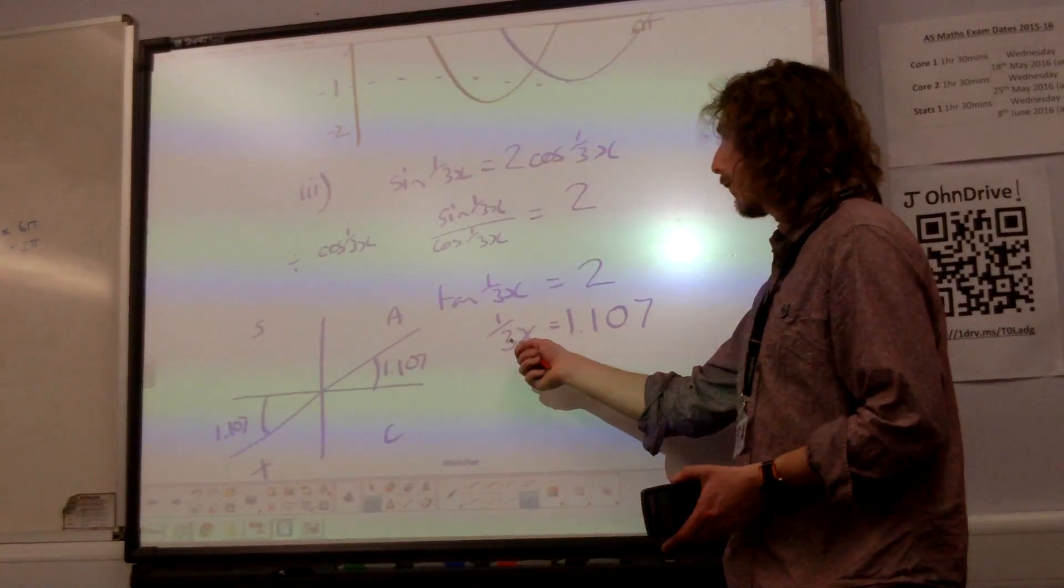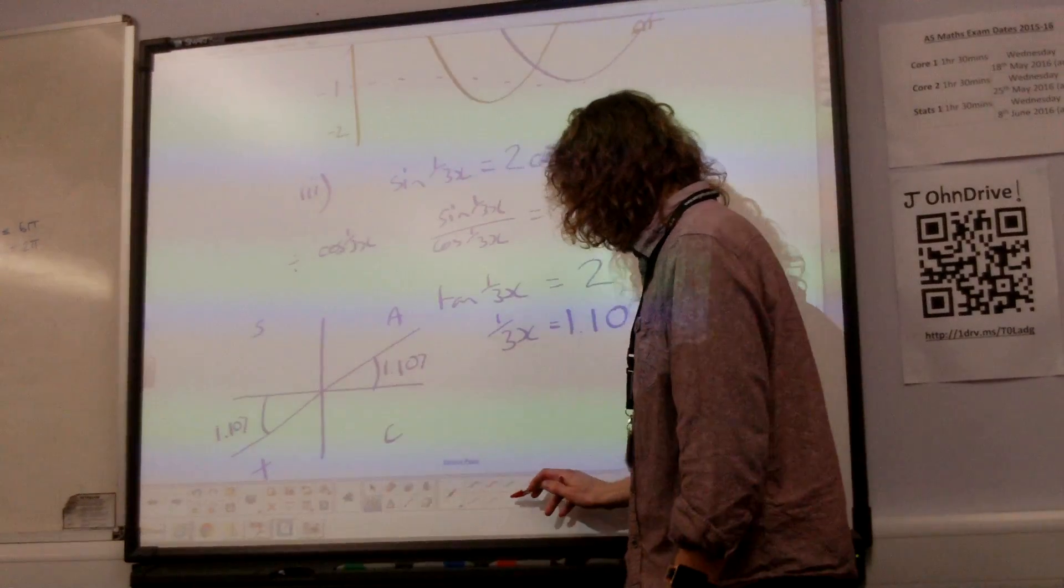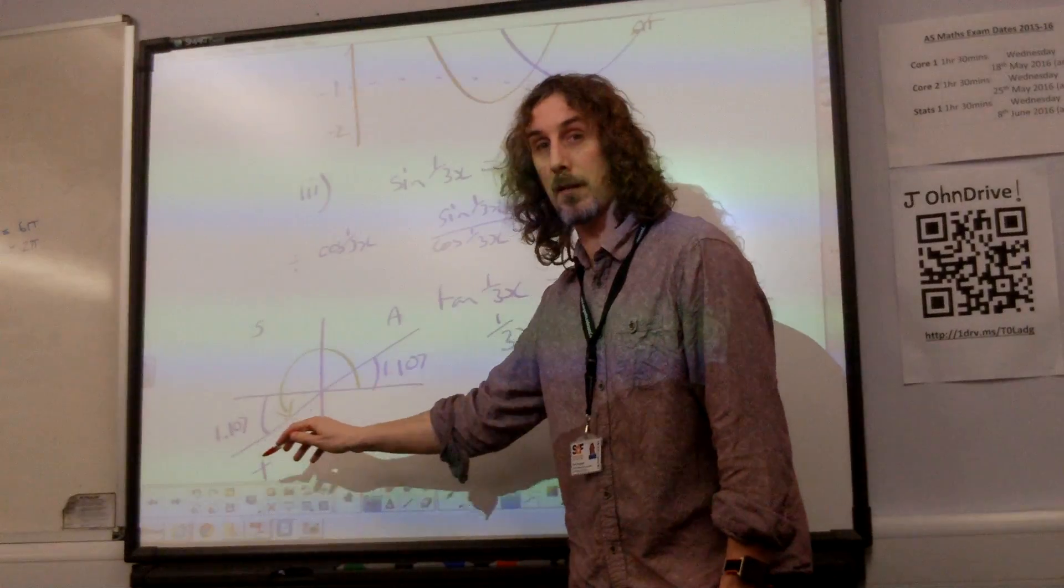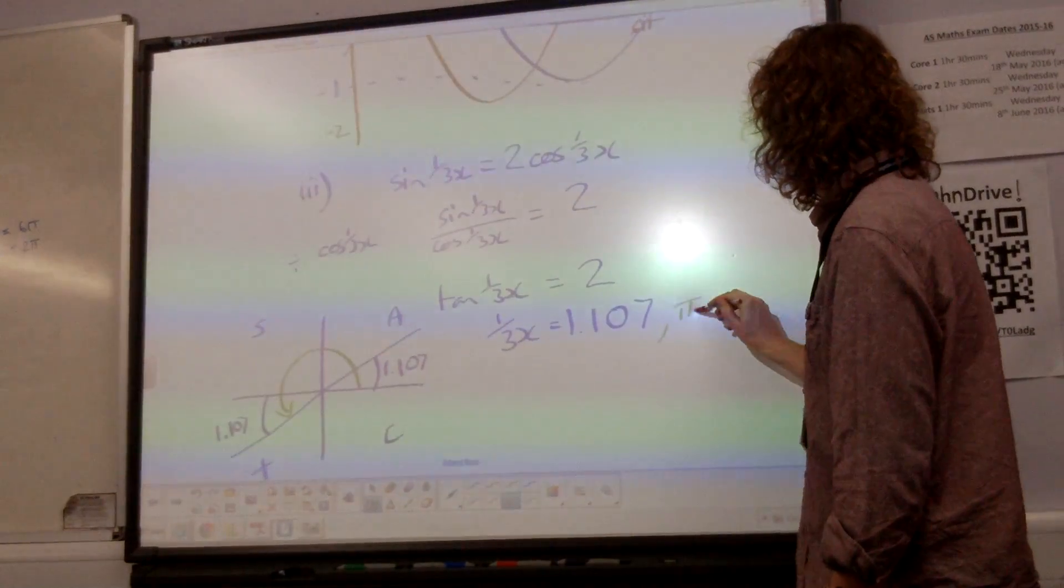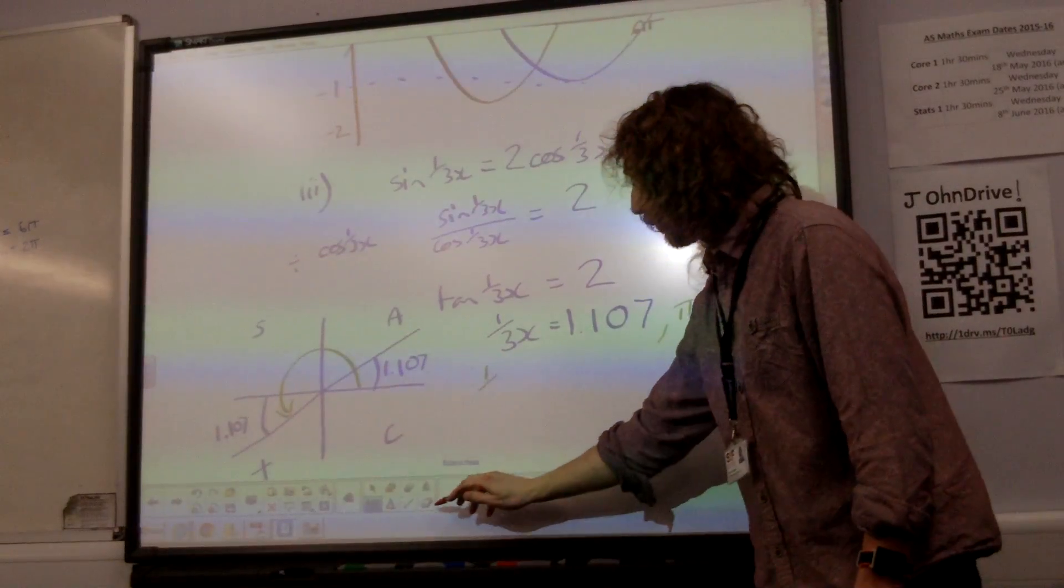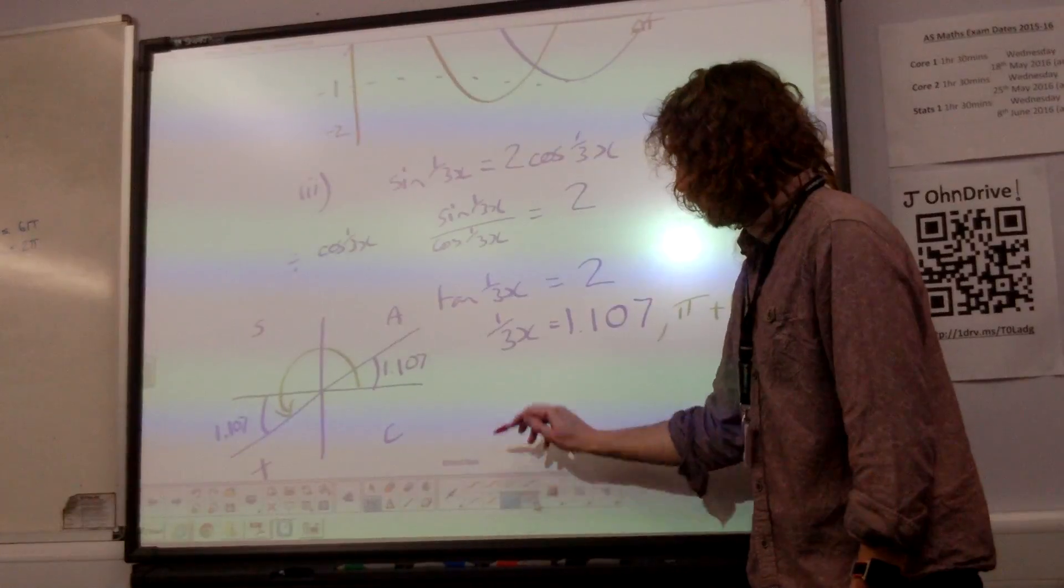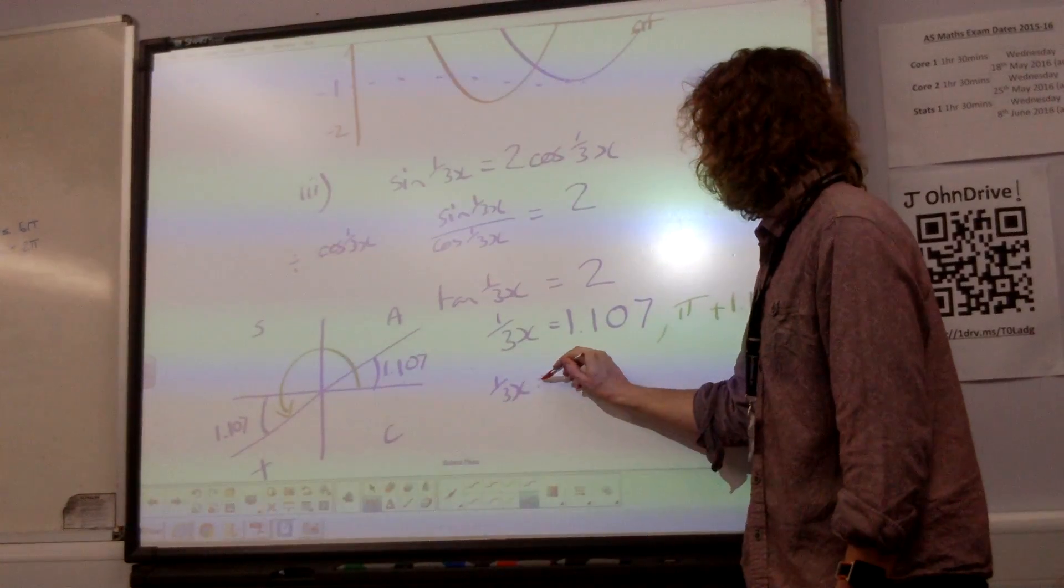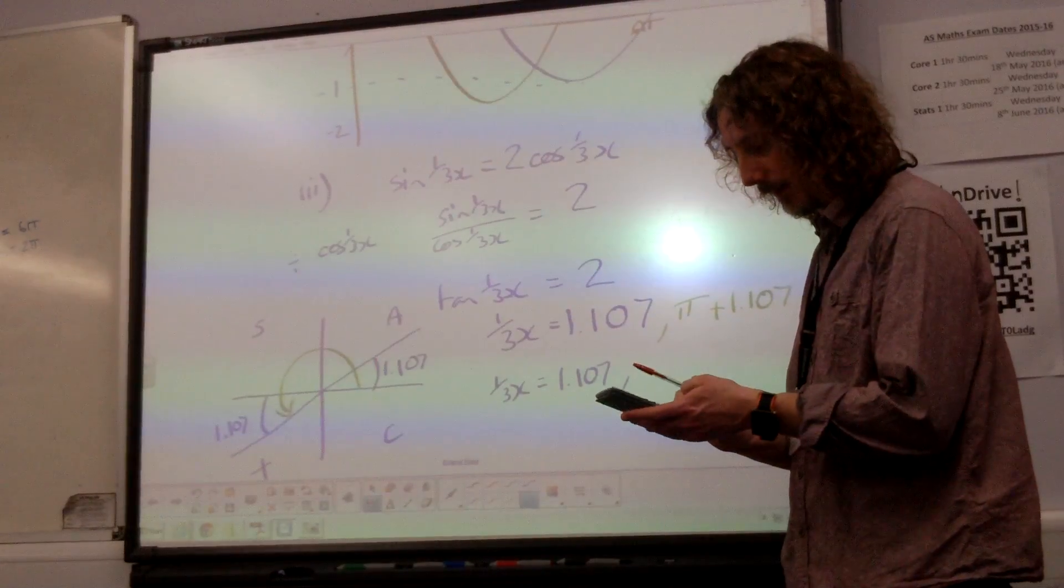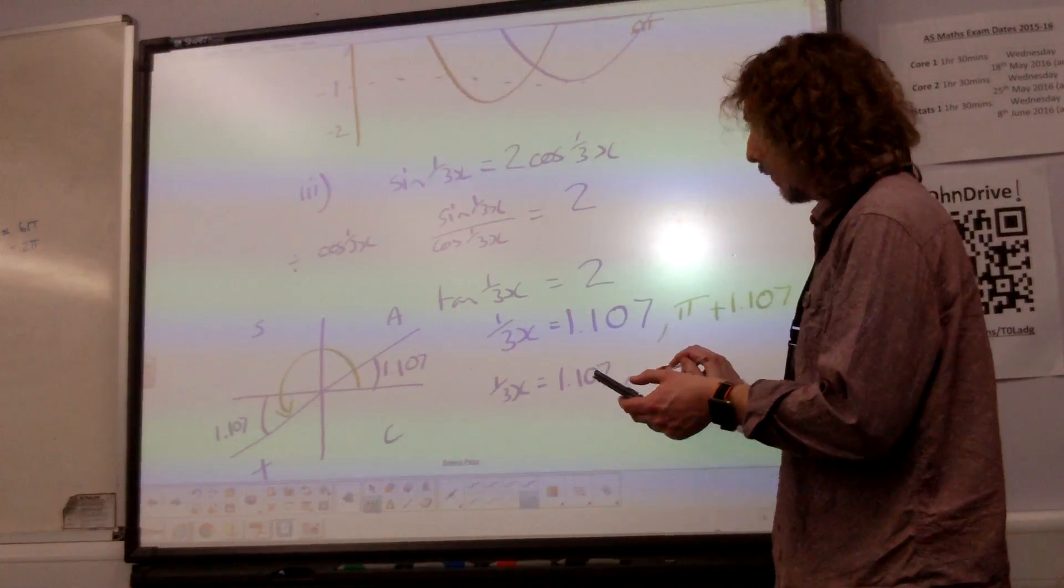So our third x is 1.107. The other value would, of course, be what you get when you're going around to here. So that is pi plus 1.107. So we've got that third x is 1.107 and 4.249.